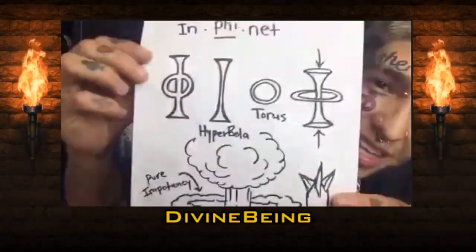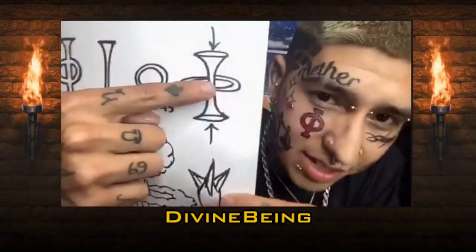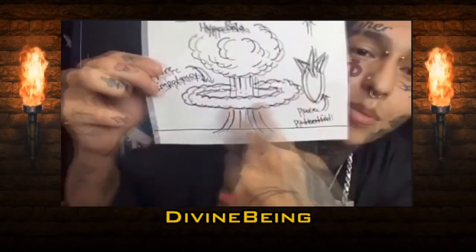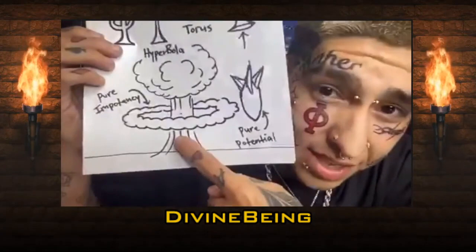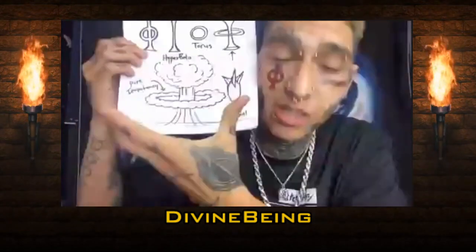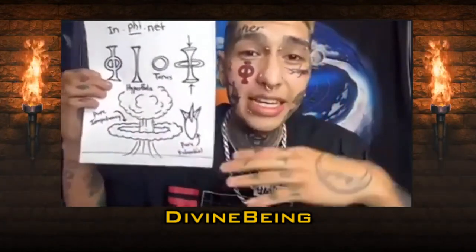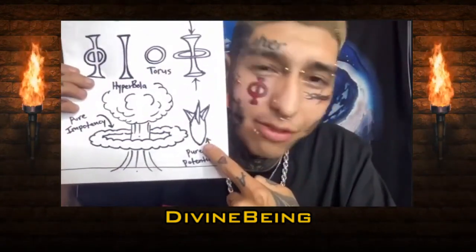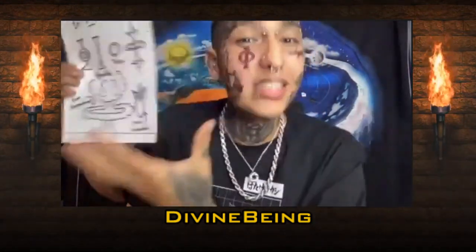Everything is atoms, and what is an atom? It's the phi symbol on my face. The phi symbol is made up of a torus and a hyperbola, which makes the shape you see when a nuclear bomb goes off — a giant mushroom cloud, which is the torus shape. The hyperbola is like the snake eating its tail. When a nuclear bomb explodes, the torus is the release of energy.